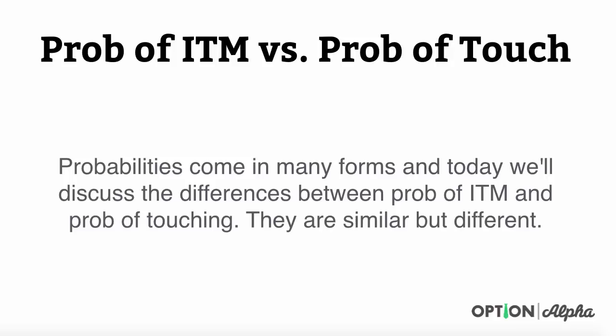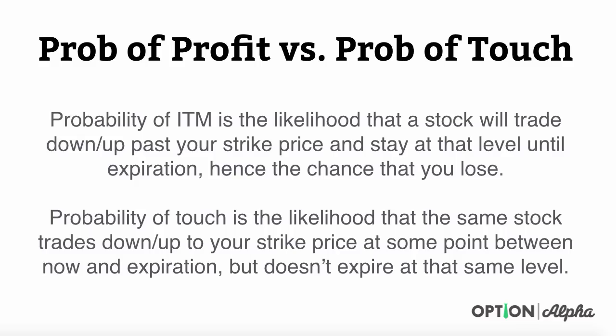We know that probabilities come in many different forms and today we'll discuss the specific differences between these two different ways of calculating probability. They are very similar in nature but they have a major difference in how you interpret them. First let's go through some descriptions and then we'll look at some examples.